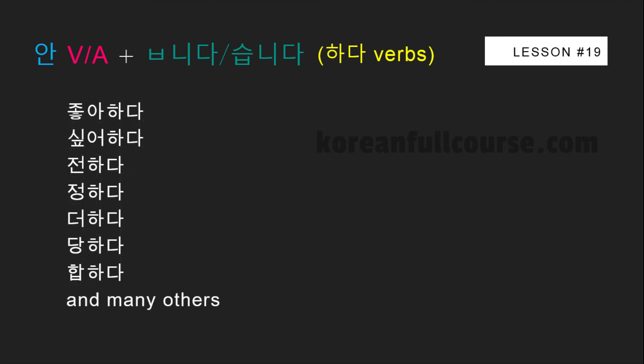For example, words like 좋아, 싶어, and similar forms are not nouns. So you cannot say 좋아 안 합니다 or 싶어 안 합니다 — that would be wrong. Since you have just started learning Korean, I recommend the safest way to make negative sentences is to start with 지 않다. Later, when you become better in Korean, you will figure out where you can use 안 and where you cannot.